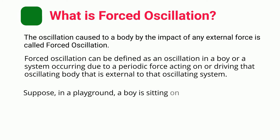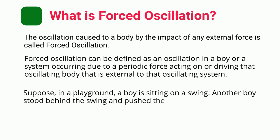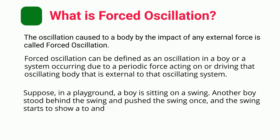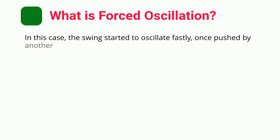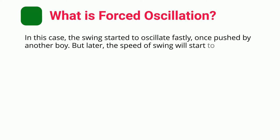Suppose, in a playground, a boy is sitting on a swing. Another boy stood behind the swing and pushed the swing once, and the swing starts to show a to and fro movement. In this case, the swing started to oscillate quickly once pushed by another boy.